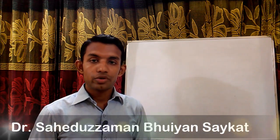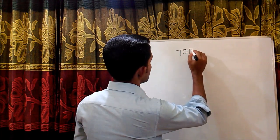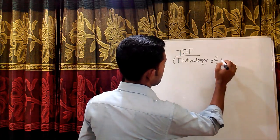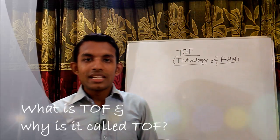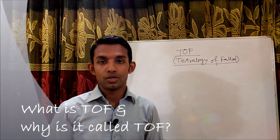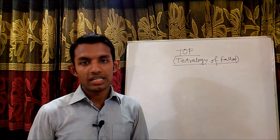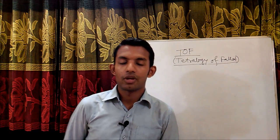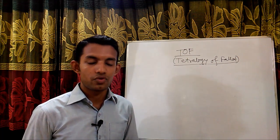I am Dr. Suikath. Today I am going to discuss about Tetralogy of Fallot. What is Tetralogy of Fallot and why is it called Tetralogy of Fallot? Tetralogy of Fallot is the most common cyanotic congenital heart disease. It is called Tetralogy of Fallot because it has four components — 'tetra' means four — that's why it is called Tetralogy of Fallot.